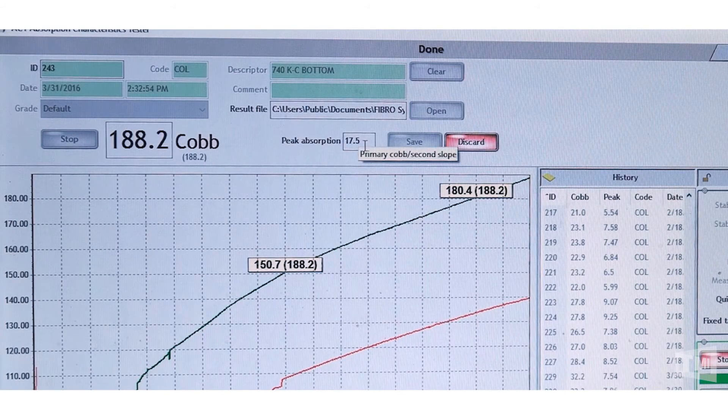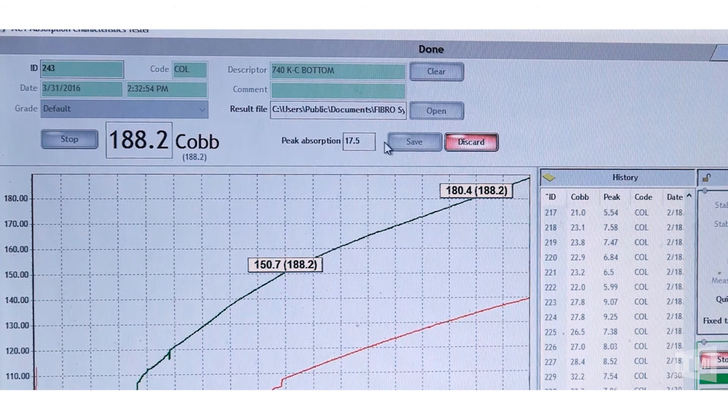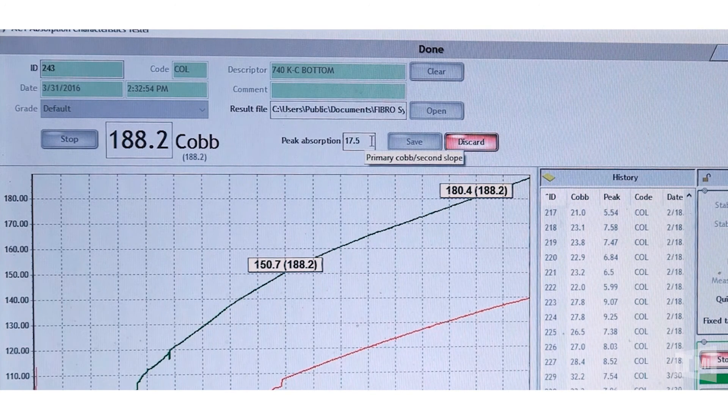The peak value or the peak number is the initial uptake of water, when the water first enters the sheet. The higher the number, the quicker rate of absorption.